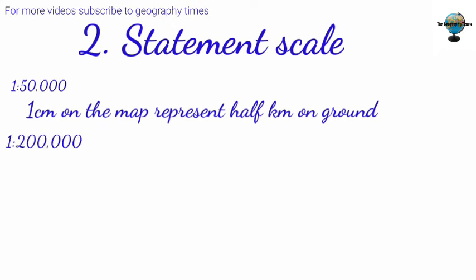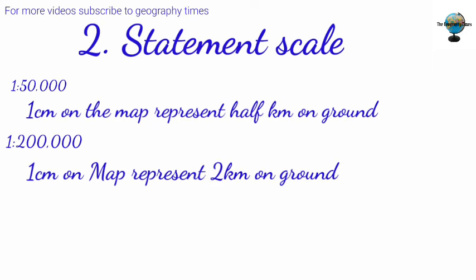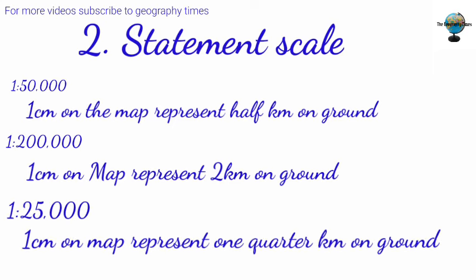Or if it is 1:25,000, you express it as one centimeter on the map represents one quarter kilometer on the ground.